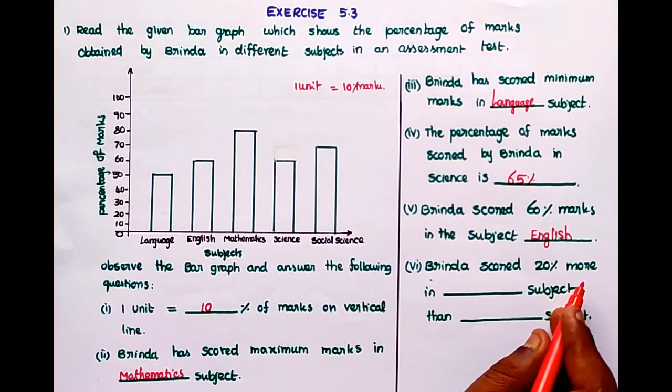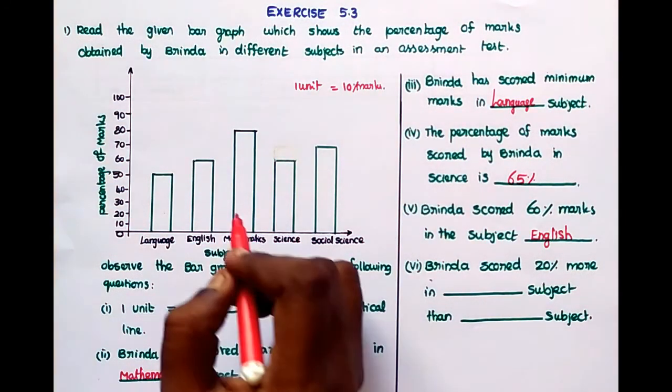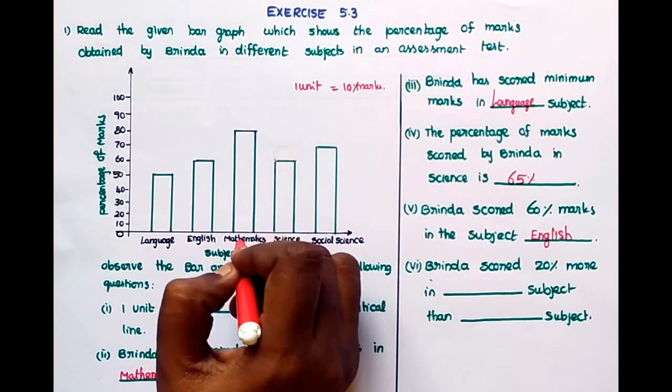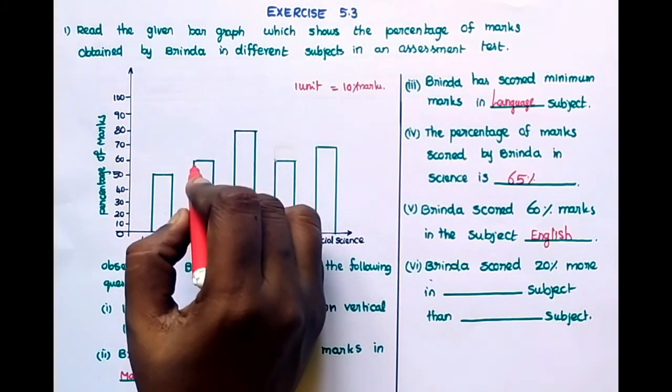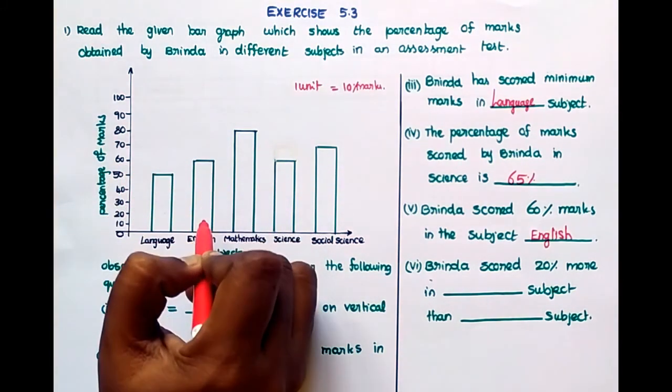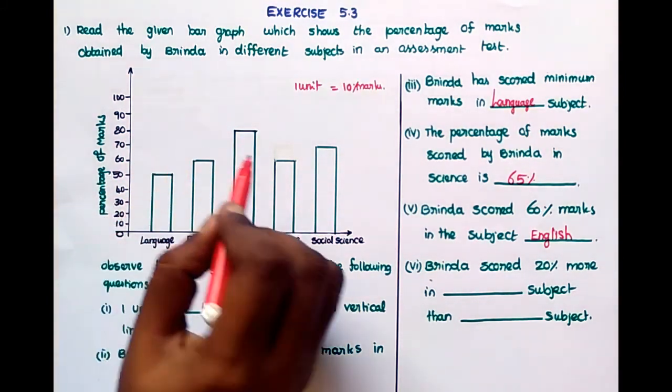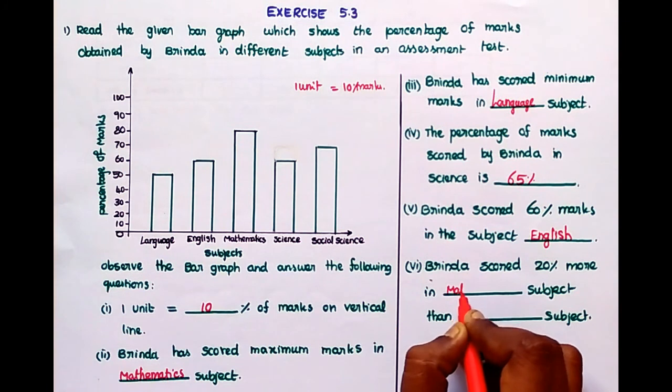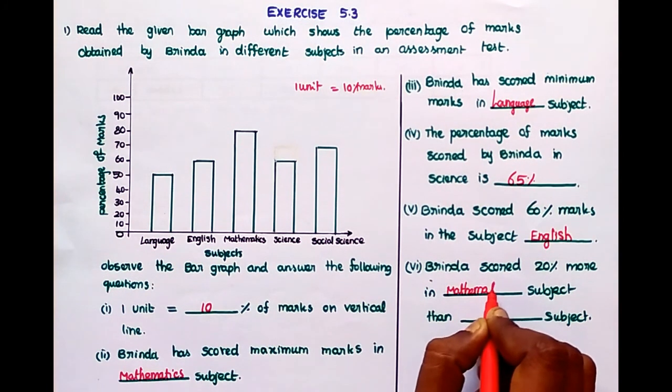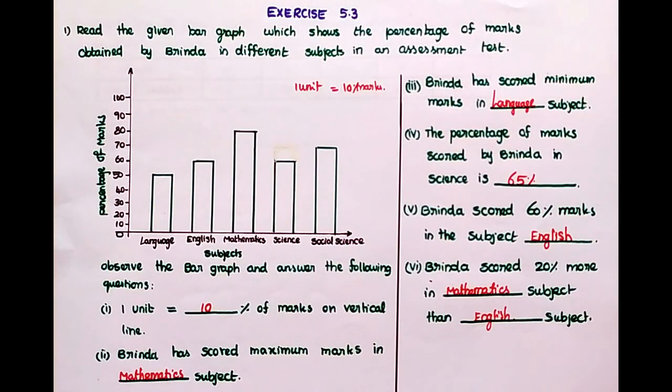And then next one, Vrinda scored 20 percentage more in dash subject than dash subject. Which subject is 20 marks more than this subject? Difference is 20 percentage. Here English is 60 percentage, maths is 80 percentage. So, mathematics than English. That is the answer.